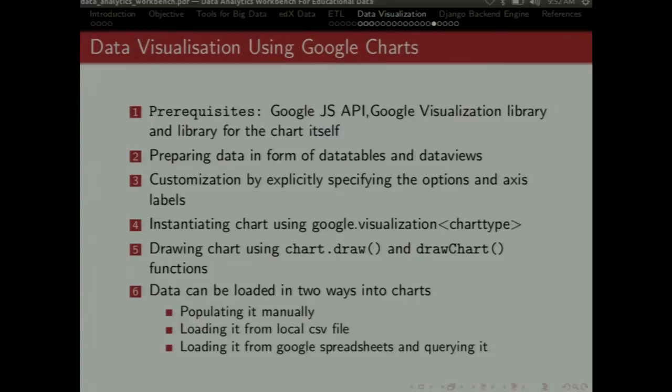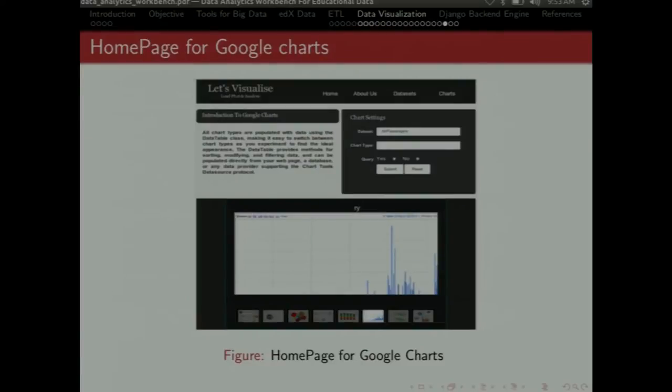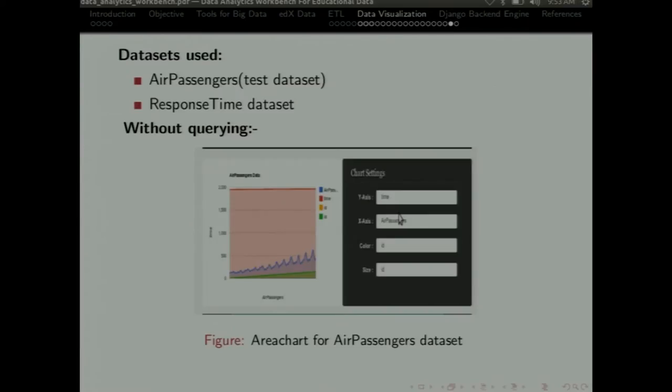And then you have three ways to populate the data. Either you can populate it manually or the CSV file that we got as output of the Hive queries. And the other one is from the Google Spreadsheets. And then we can query it also. This is the interface that we developed to visualize using the Google charts. So this is the homepage. And then next, here you can, as you can see that you can select the data set and the chart type. You can select the data set and the chart type. And then you can select whether you want to query or not. And then once you submit, it will be directed to the other page.